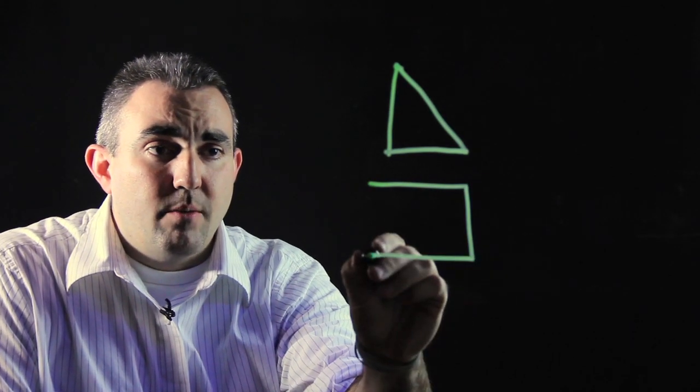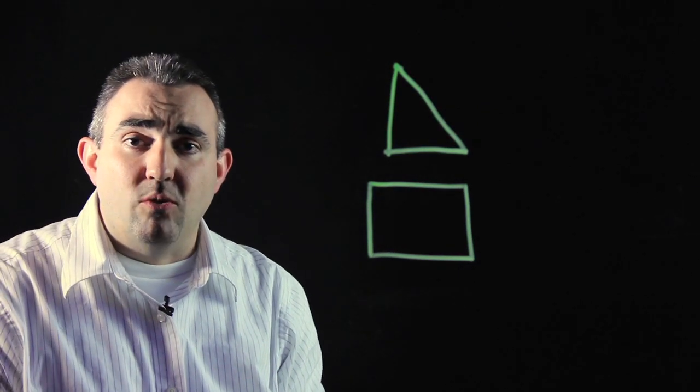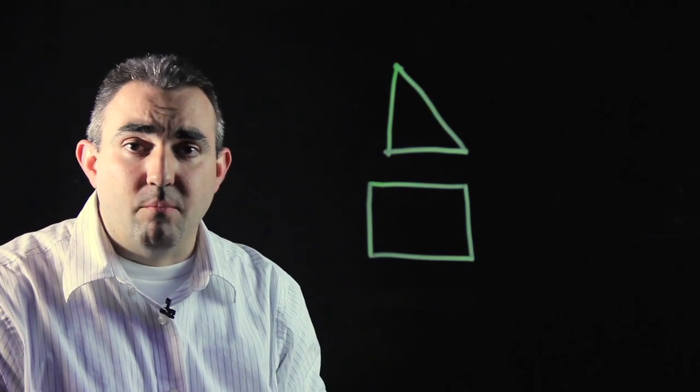A four-sided shape is called a quadrilateral. Those consist of rectangles, squares, trapezoids, rhombuses, and parallelograms.